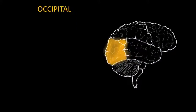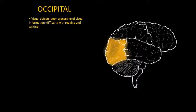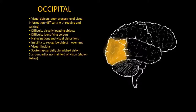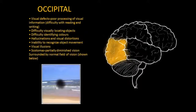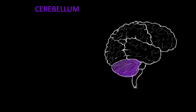The occipital lobe lies in the most posterior part of the brain. Its main function is to control the visual aspects. Damage to this lobe causes visual defects such as poor processing of visual information, difficulty in visually locating objects, difficulty in identifying colors, having hallucinations, visual distortions and visual illusions, the inability to recognize movement of objects, and getting scotoma, which is defined as partially diminished vision surrounded by a normal field of vision.